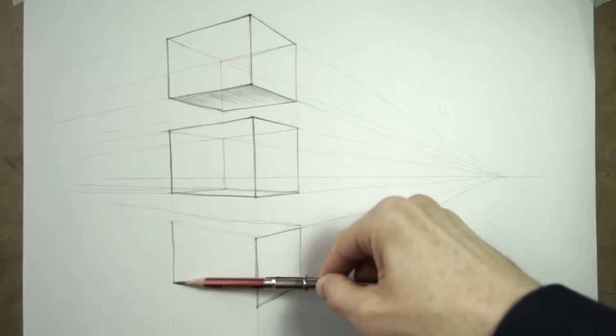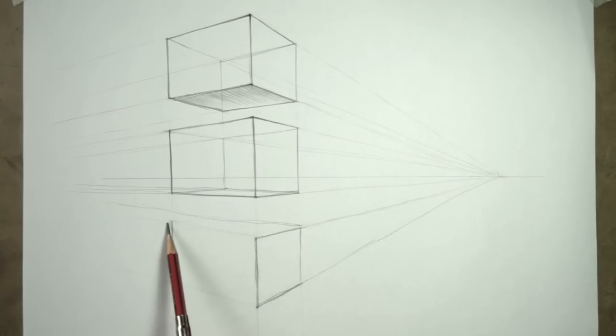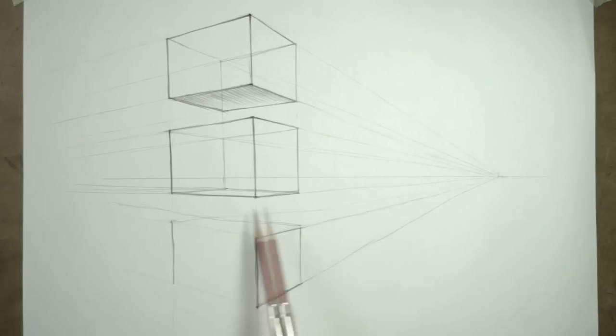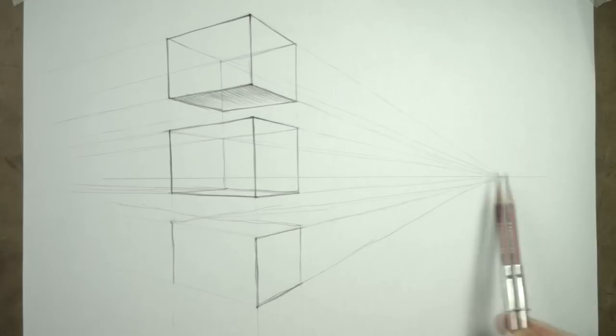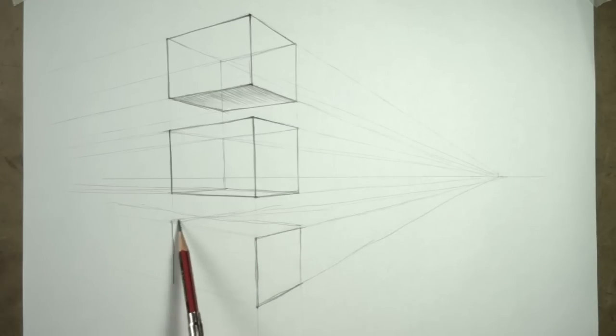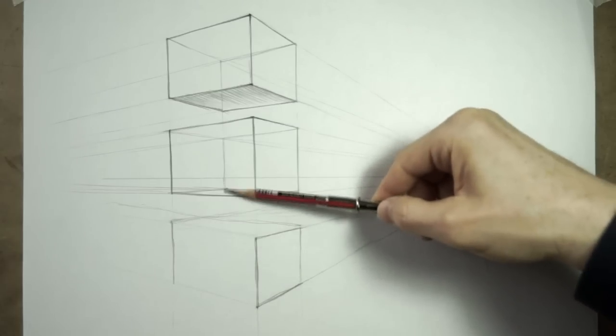Find some household objects that resemble cubes or cuboids. You could use a stack of books, a box, or anything similar. Observe how it looks in perspective. Measure the angles of its edges from various points of view and in different relations to the viewer, such as whether it is seen from above or below.